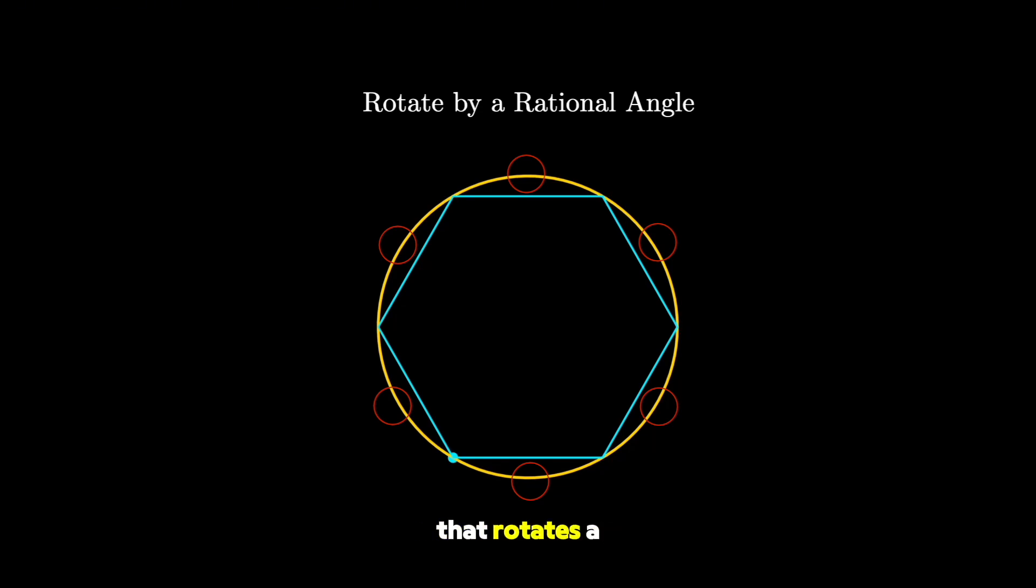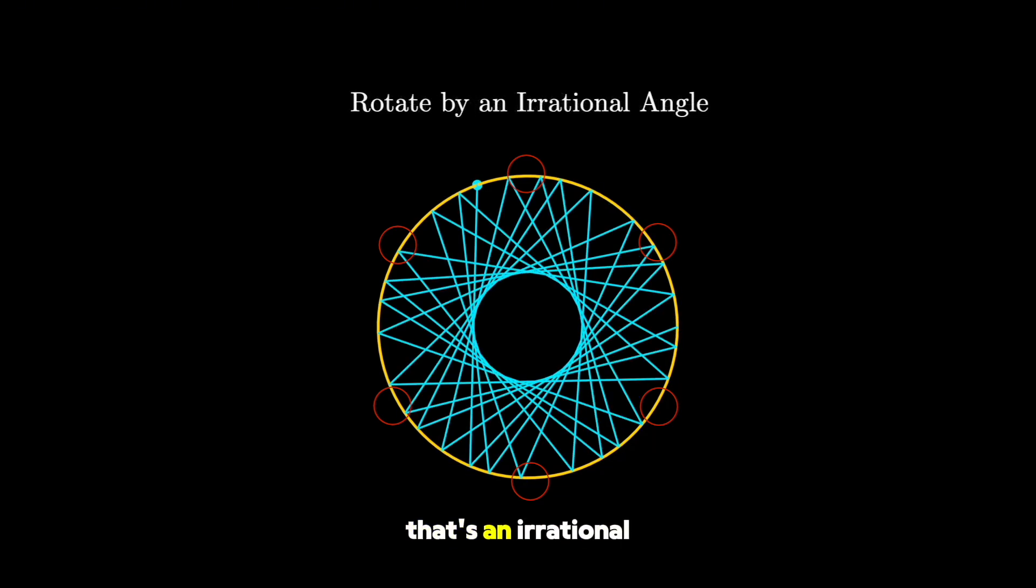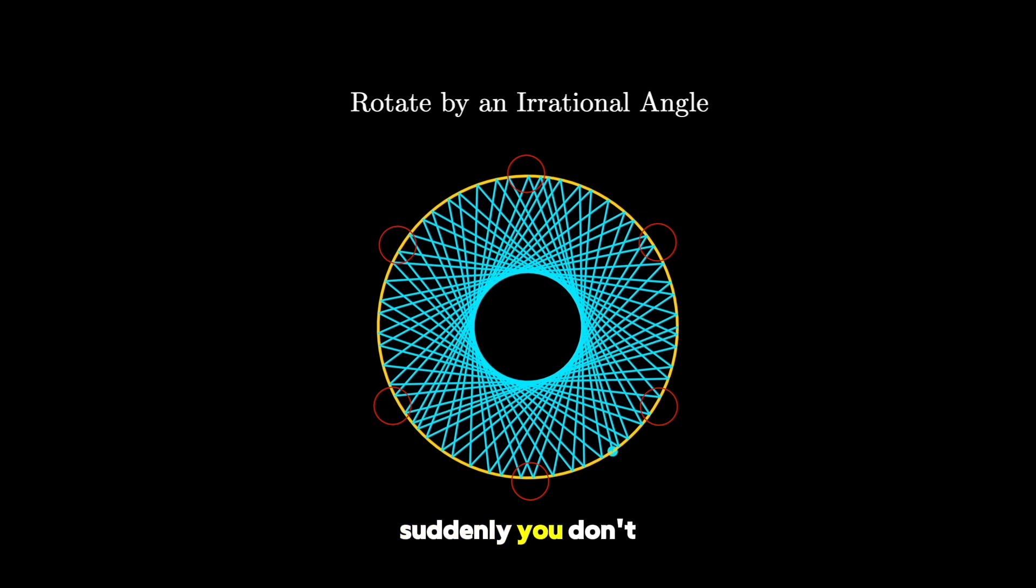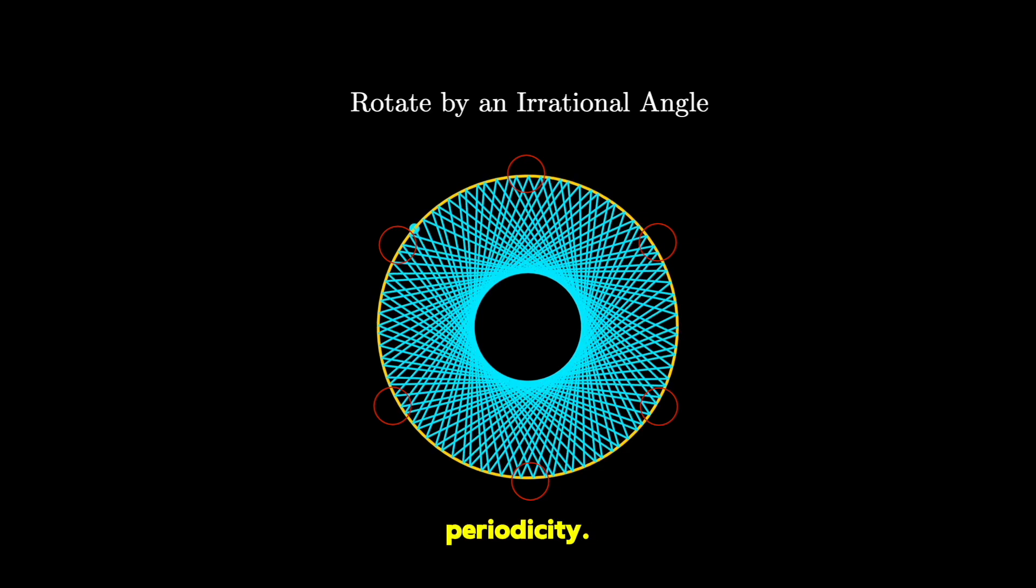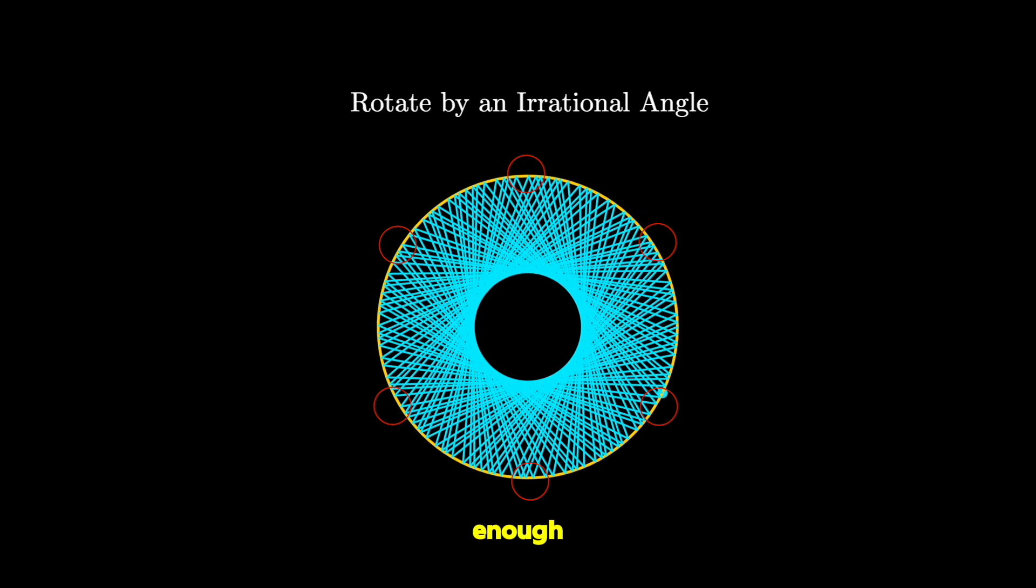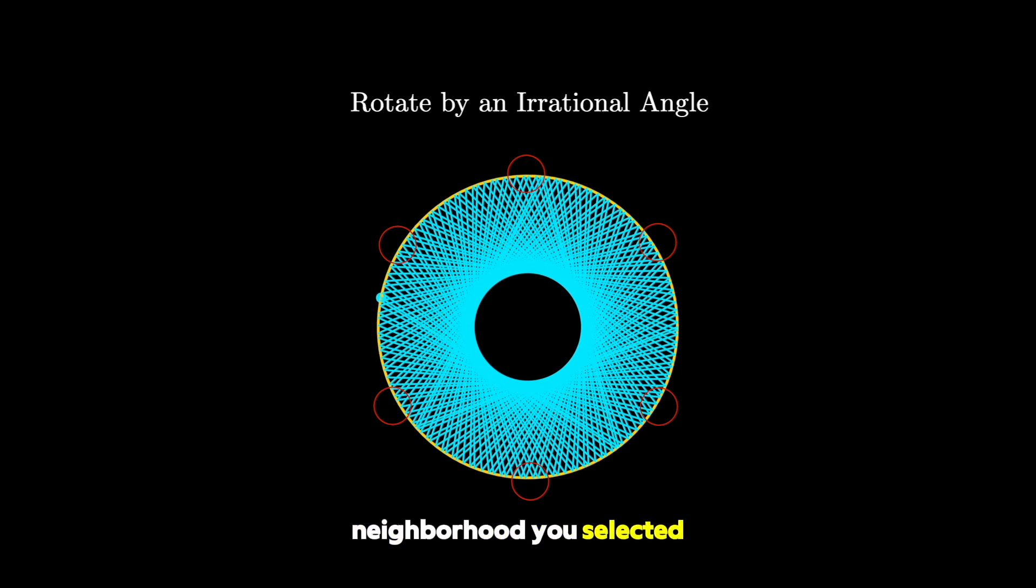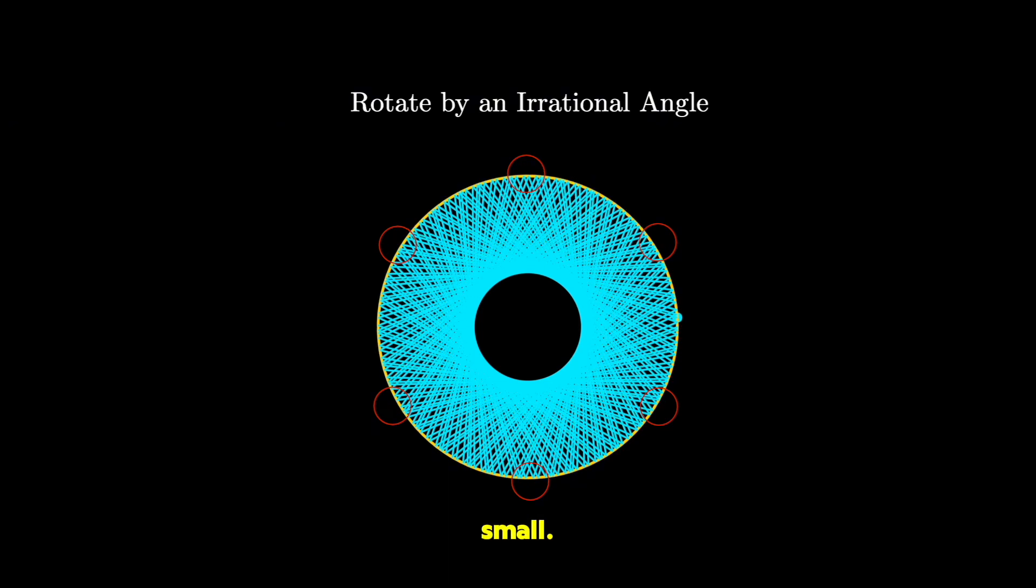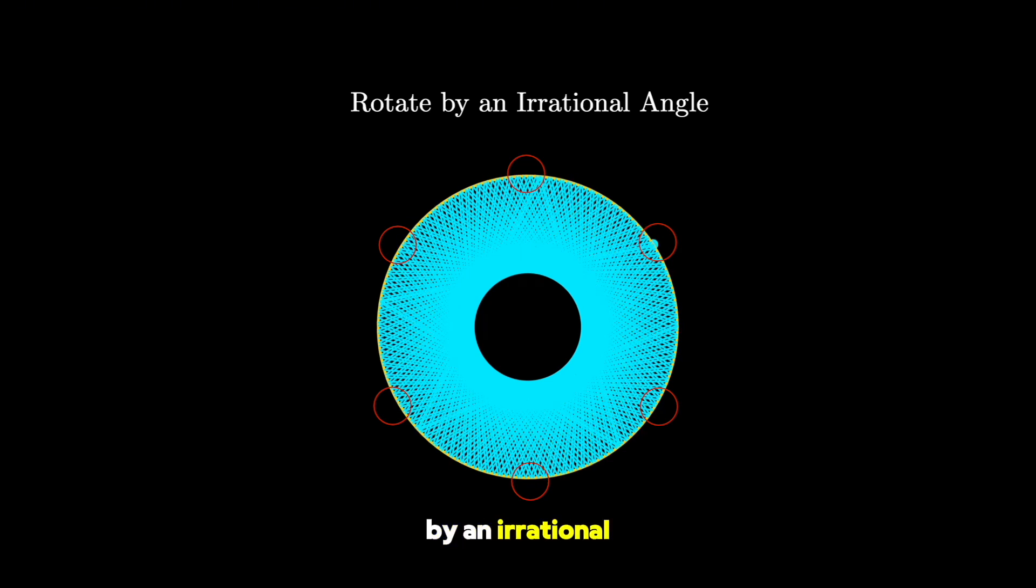However, if you consider the map that rotates a point by some angle that's an irrational number, suddenly you don't get the same periodicity. In fact, if you wait long enough, you would end up in any neighborhood you selected, no matter how small. So the map that rotates a point on the circle by an irrational angle is topologically transitive.